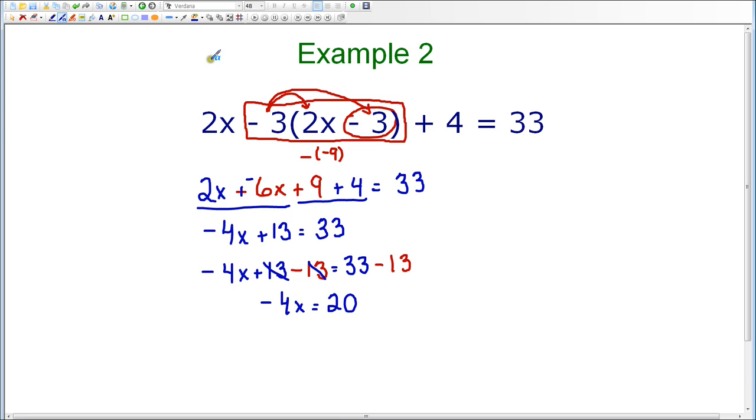Now, I'm down to a one-step equation. I have negative 4x, which means negative 4 times x. The opposite of multiply is divide. So, I'm going to divide both sides by the coefficient, which is negative 4, and that means that I am now left with the variable x, because negative 4 divided by negative 4 is 1, and 1 times x is x. And on the right-hand side, I have 20 divided by negative 4, which is negative 5.